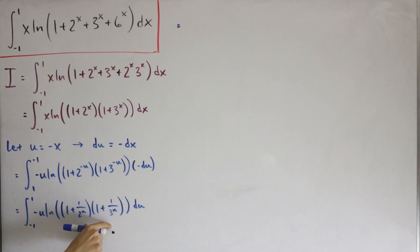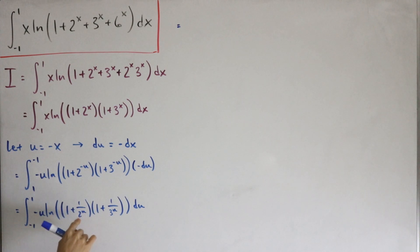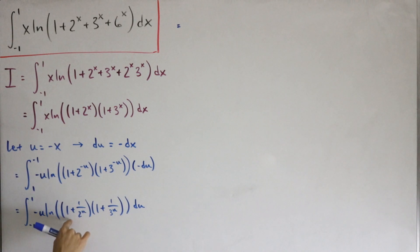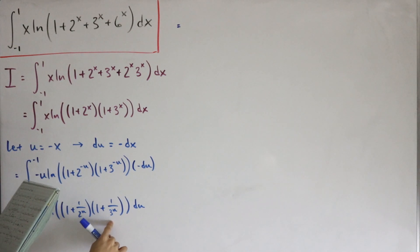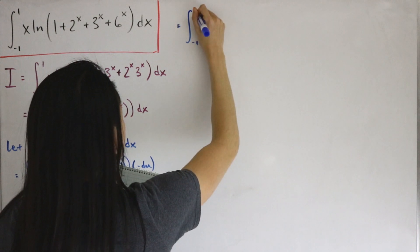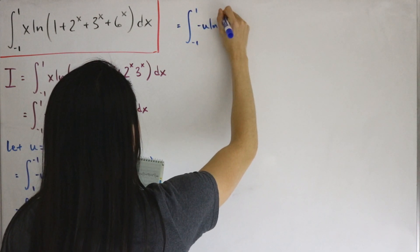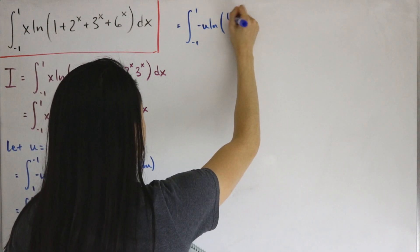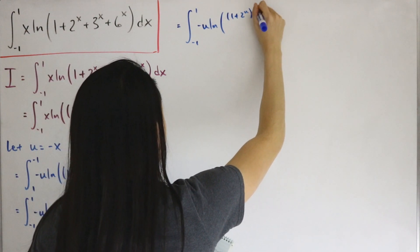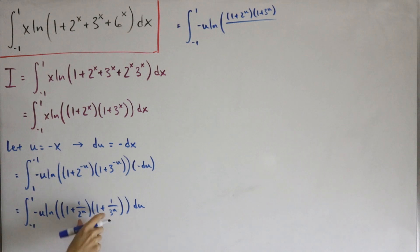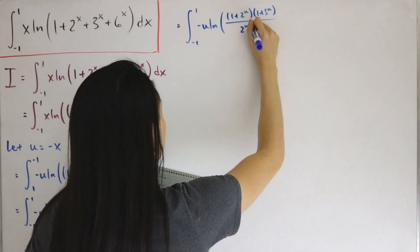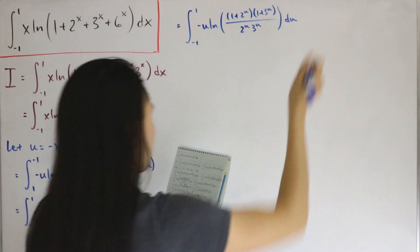To combine into a single fraction, we get a common denominator. Multiplying through, the first factor becomes (1 + 2^u)/2^u and the second becomes (1 + 3^u)/3^u. So the product inside the log becomes (1 + 2^u)(1 + 3^u) over the common denominator 2^u · 3^u, giving the integral from -1 to 1 of -u · ln[(1 + 2^u)(1 + 3^u) / (2^u · 3^u)] du.